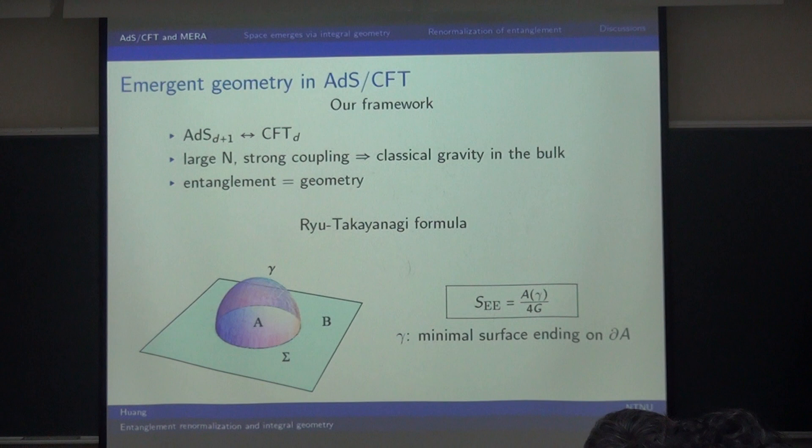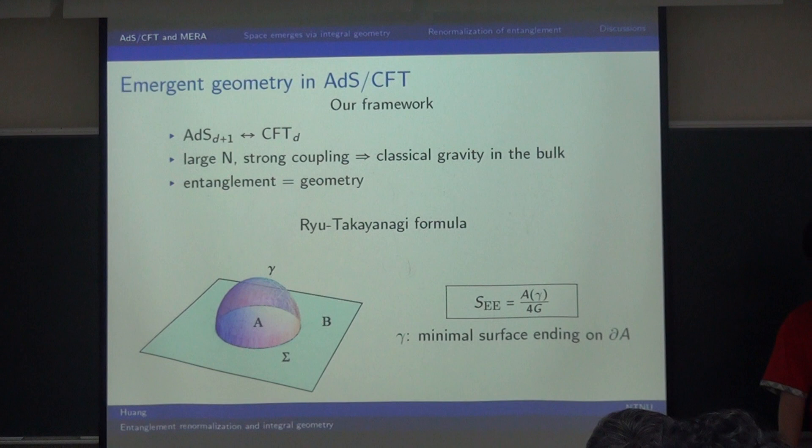One hint we have is the RT formula. We compute the entanglement entropy of some sub-region A with its complement using the minimum surface gamma ending on the entanglement surface sigma. This gives us a connection between the entanglement and geometry.